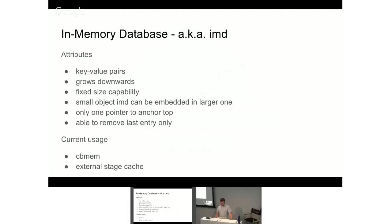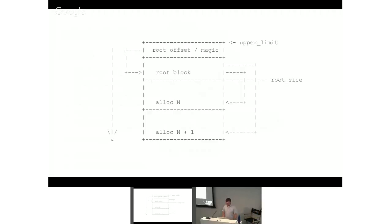You can remove the last three entries. The small optimization we currently have is that for small objects added into CB-MEM, they actually occupy an IMD within an IMD. You can have really large blocks in the big one, and then within one of those blocks a small IMD — where your min block size is like 32 bytes. So if you're stashing tiny bits of different objects in there, it just reduces fragmentation. The external stage cache uses it as well.